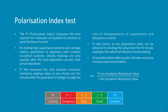Polarization Index is a ratio of the 10-minute insulation resistance value to the 1-minute insulation resistance value. It gives an inference of quality of insulation: if the value is between 0 to 1 it's dangerous; between 1 to 2 the insulation quality is poor; between 2 to 5 it's considered good; and greater than 5 is considered excellent. Please note the value is also assessed as per type and class of insulation.